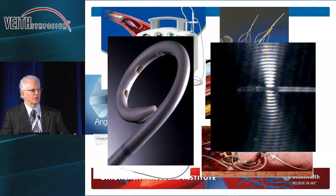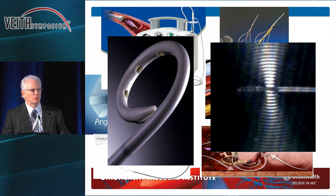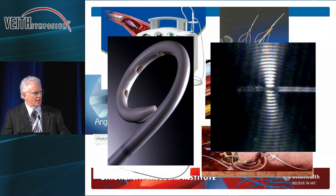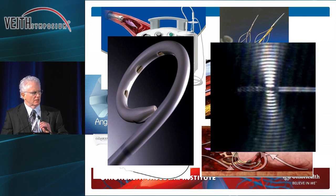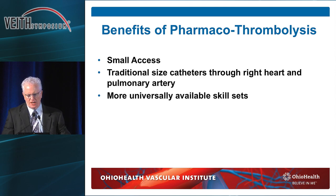We're hopefully going to have a methodology for treating patients that is more uniformly accessible to even our community hospitals, so that we can take patients that may need to be treated and can't wait for transfer. The two options, as Rob already talked about, are a bland catheter — meaning a catheter with side holes, like a garden hose that waters all your plants — versus ultrasound-guided. The benefits of pharmacothrombolysis are small access, traditional-sized catheters, right heart and pulmonary artery access, and more universally available skill sets throughout the nation.